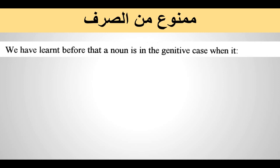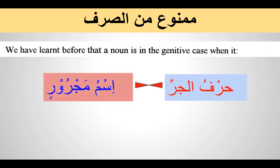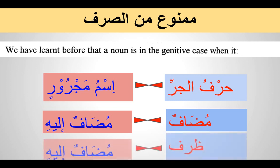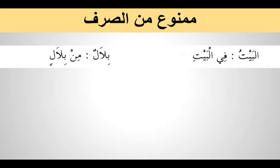A noun can take kasra when it comes to the majroor state in three conditions: after a harf jar, after a mudaf (where the mudaf ilayhi always takes kasra), and after a zarf followed by a mudaf ilayhi. Basically we have ism majroor and mudaf ilayhi as the two conditions where a noun takes kasra.